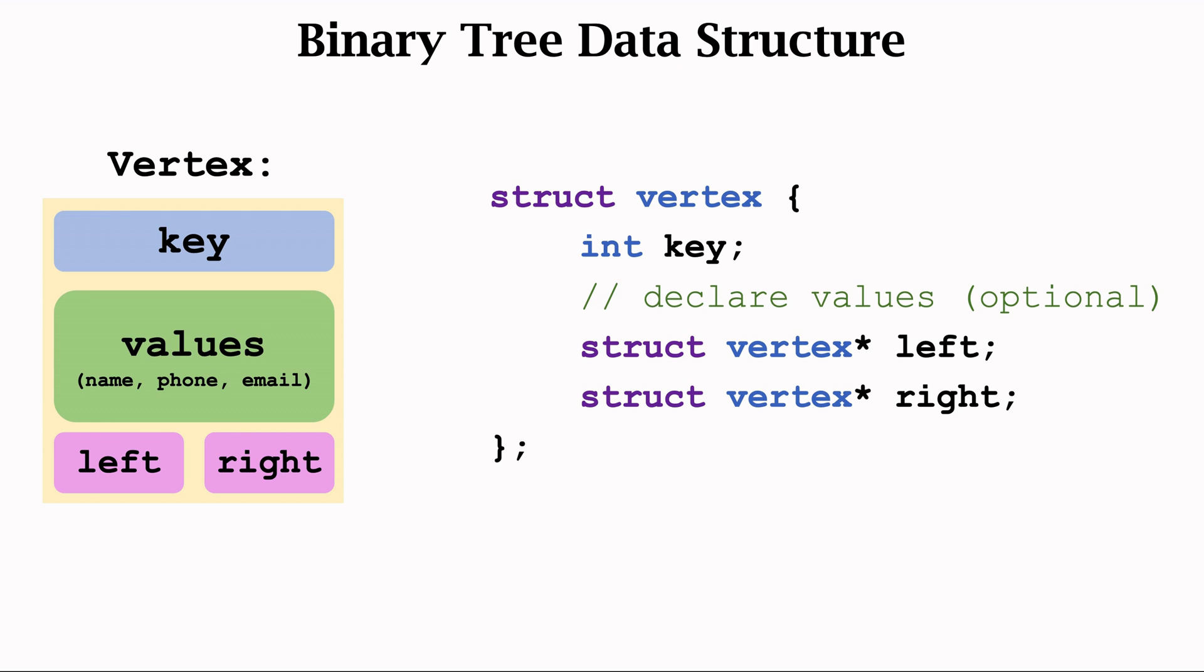Here is the C++ implementation of the vertex. Here the key is an integer, but it can also be a character or a string. A vertex can store some values, but a vertex does not have to contain values.